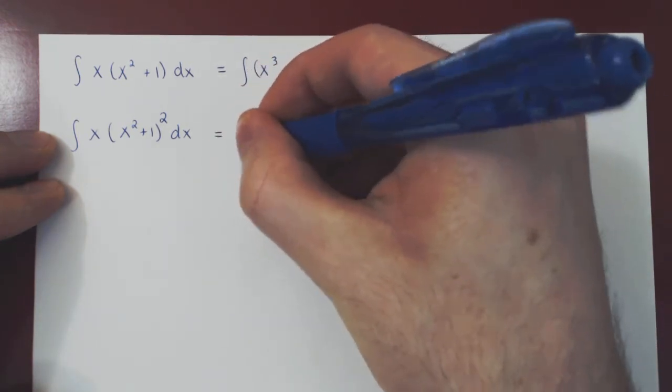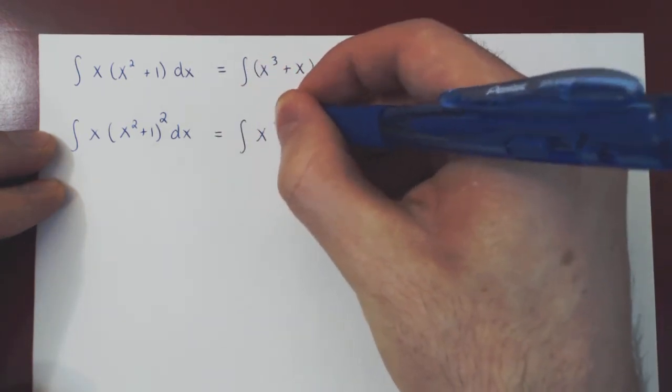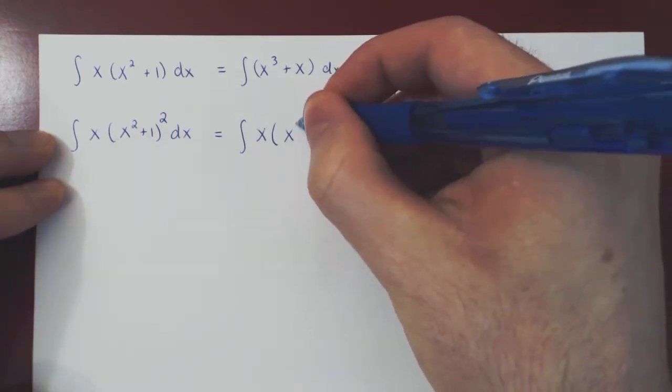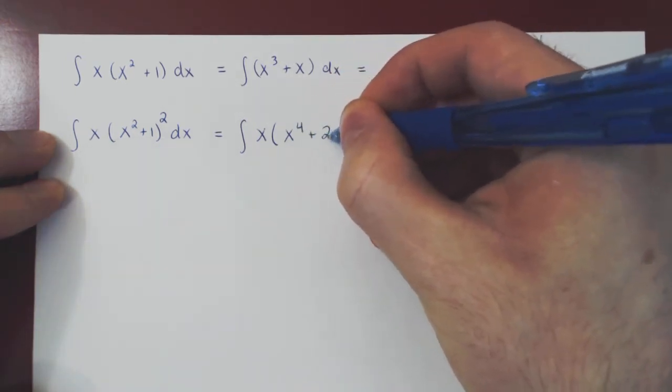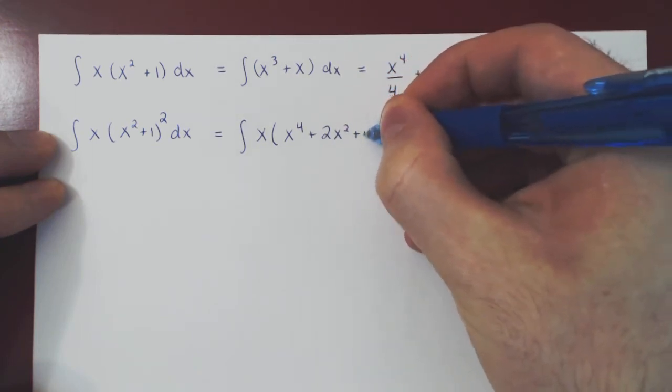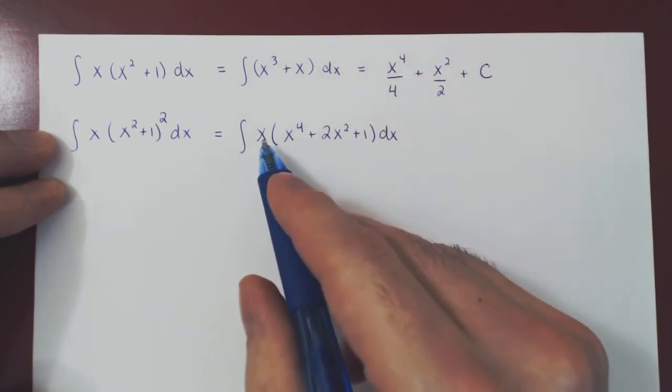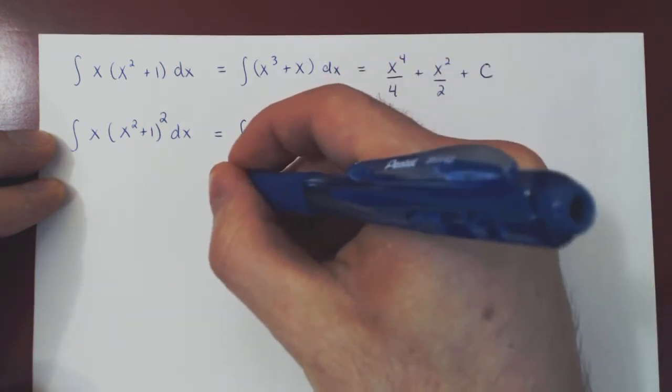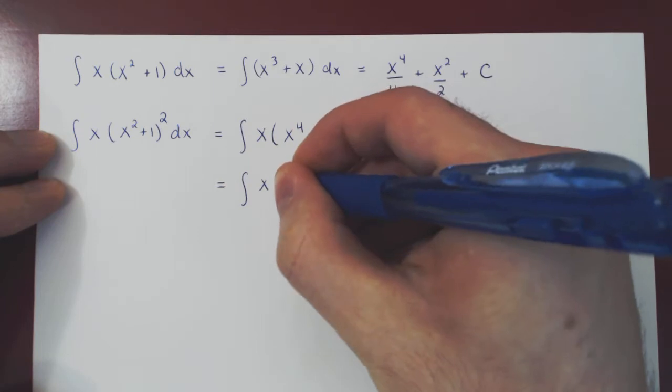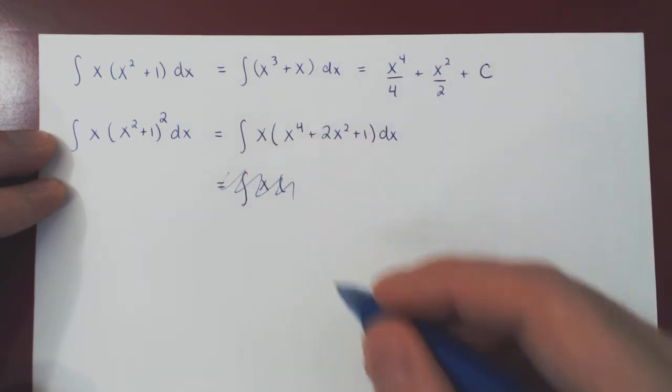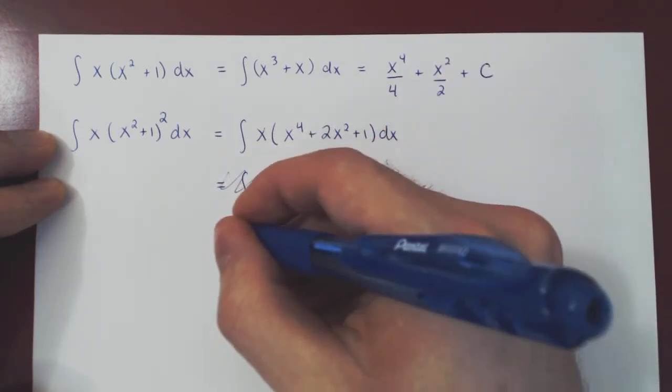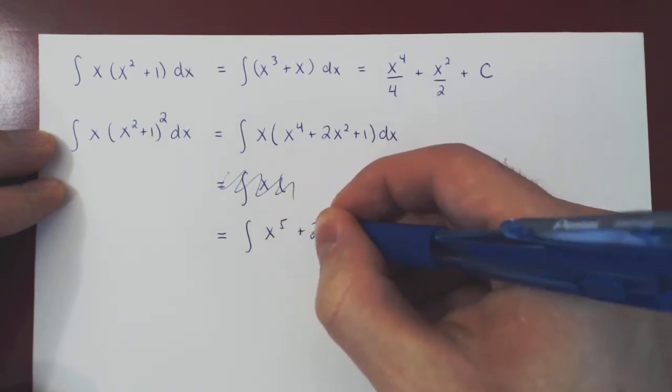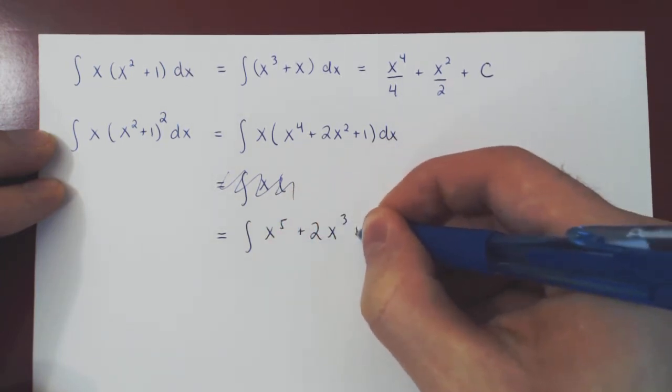So we'll square this, then multiply by x, and once again we'll have the power rule. We have x times, if you square this, you'll get x to the 4 plus 2x squared plus 1. There's still a product here, multiply one more time.